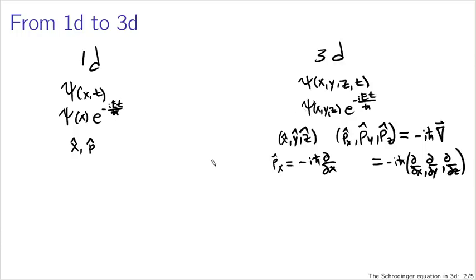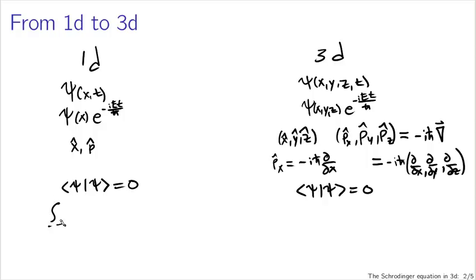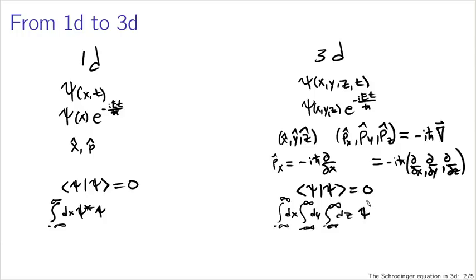We also have counterparts for expressions like the normalization of the wave function. The inner product of the wave function with itself in one dimension, or in three dimensions, is still going to be equal to one. In one dimension we had an integral from minus infinity to infinity dx of psi-star psi. In three dimensions we integrate from minus infinity to infinity in dx, dy, and dz, with the same integrand psi-star times psi. The normalization integrals are equal to one, whether we're talking about one dimension or three dimensions.